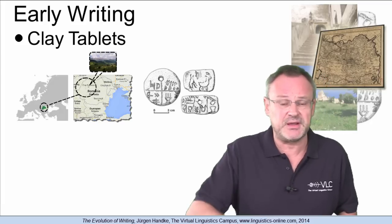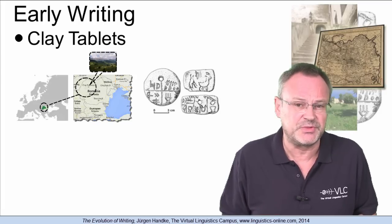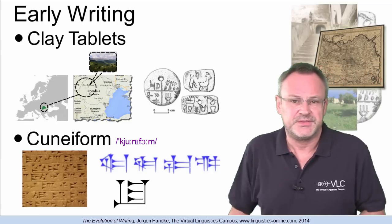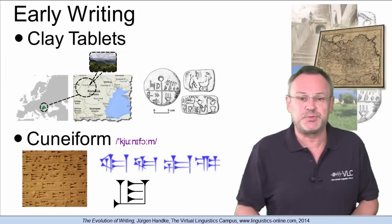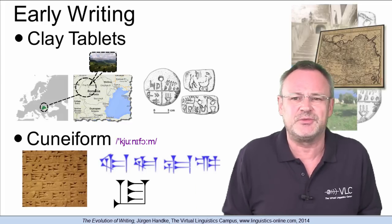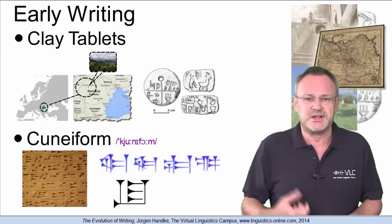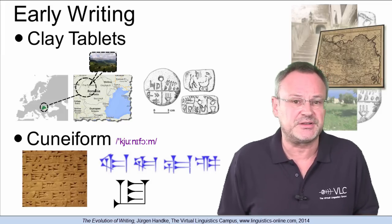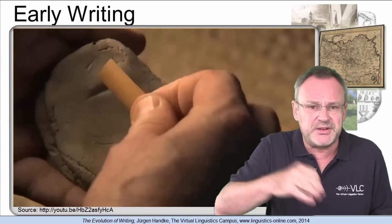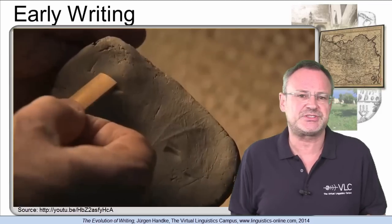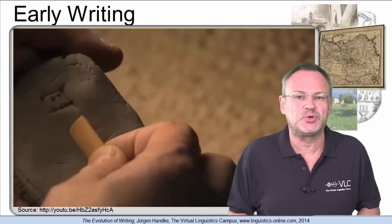Later on in the Sumerian Empire, around 4000 BC, people began to develop the first acknowledged true writing system, the so-called cuneiform. This script is one of the earliest known forms of written expression. Emerging in Sumer around 3000 BC — with predecessors reaching into the late 4th millennium — cuneiform writing began as a system of pictographs. In the course of the 3rd millennium BC, the pictorial representations became simplified and more abstract. Cuneiform documents were written on clay tablets by means of a blunt reed stylus, and the impressions left were wedge-shaped, giving rise to the name cuneiform — wedge-shaped — from Latin cuneus, meaning wedge.